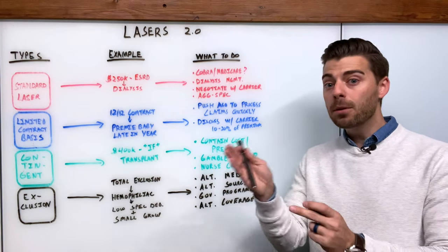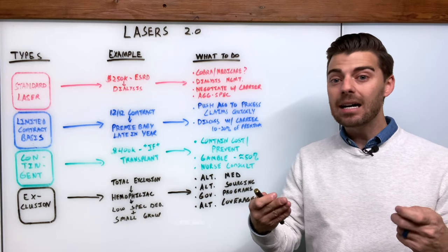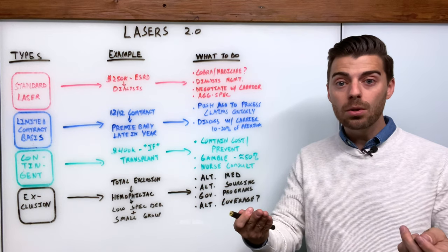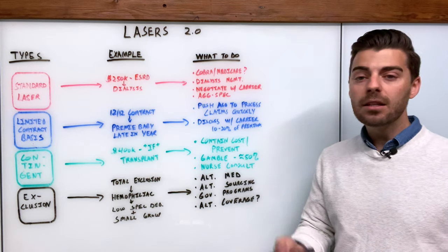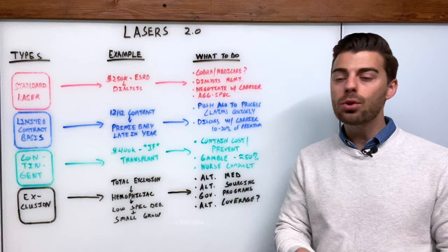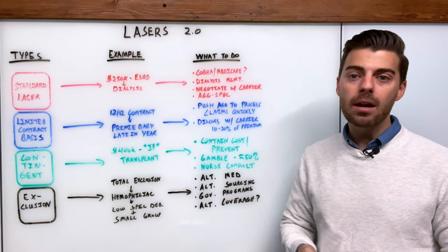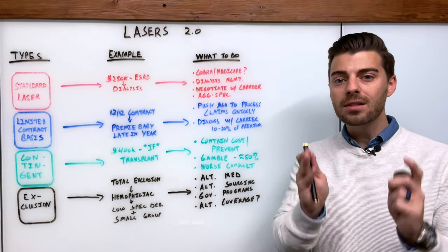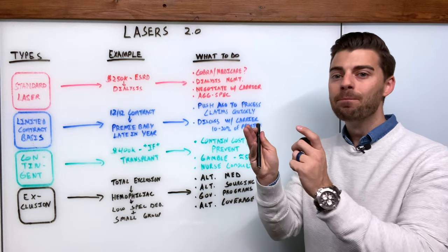If 80 plus percent of stop-loss policies have a claim that hits a reimbursement in any given year, then it's very likely that you're also going to run into a laser at some point on one of your groups. So what do we do? What types of lasers, what are some examples, how do we counteract them?